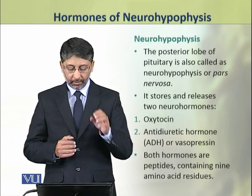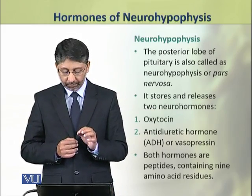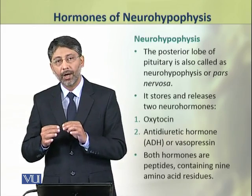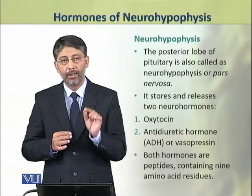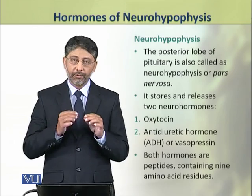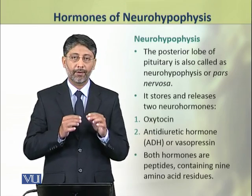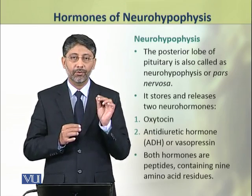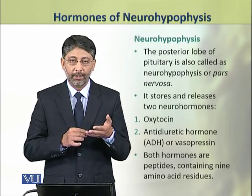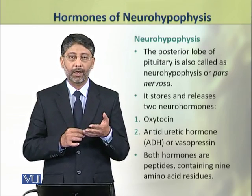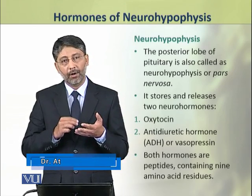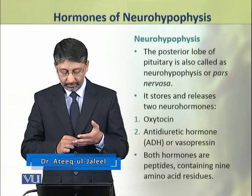The posterior lobe of the pituitary is also called neurohypophysis or pars nervosa. It stores and releases two hormones: the antidiuretic hormone ADH and oxytocin.